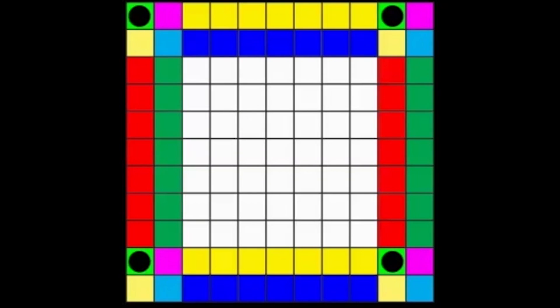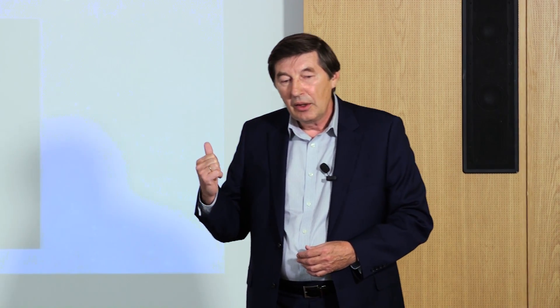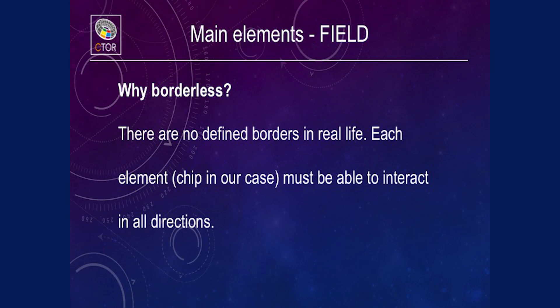This is a very interesting situation because we can use this field for any game, not only my game. We can use this field from a five-by-five square to a hundred-by-hundred square. The rules don't change, but strategies change. The main element is the field. There is no defining border — that border is a field for life.